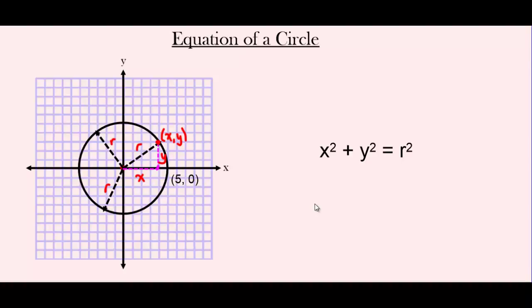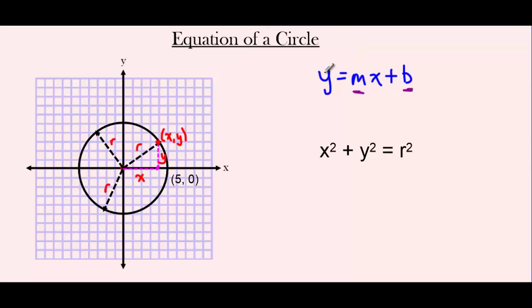The equation of a circle is x² + y² = r². It's the Pythagorean theorem, where r is the radius of the circle that's going to change. Just like in a linear equation y = mx + b, the x and y are always present in the equation while m and b values change — for an equation of a circle, x and y stay the same and only the r value changes. The radius is what defines one circle from another.